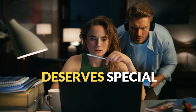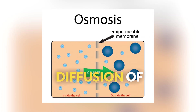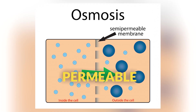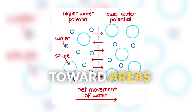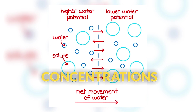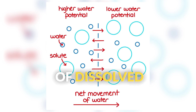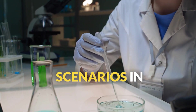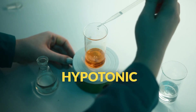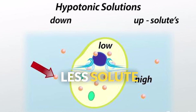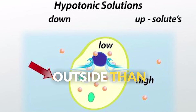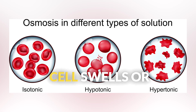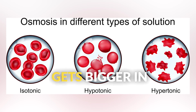Osmosis deserves special attention. It's the diffusion of water across a selectively permeable membrane — water moves toward areas of higher concentrations of dissolved substances. This creates three important scenarios. In hypotonic solutions, where there's less solute outside than inside the cell, water moves in and the cell swells or gets bigger.